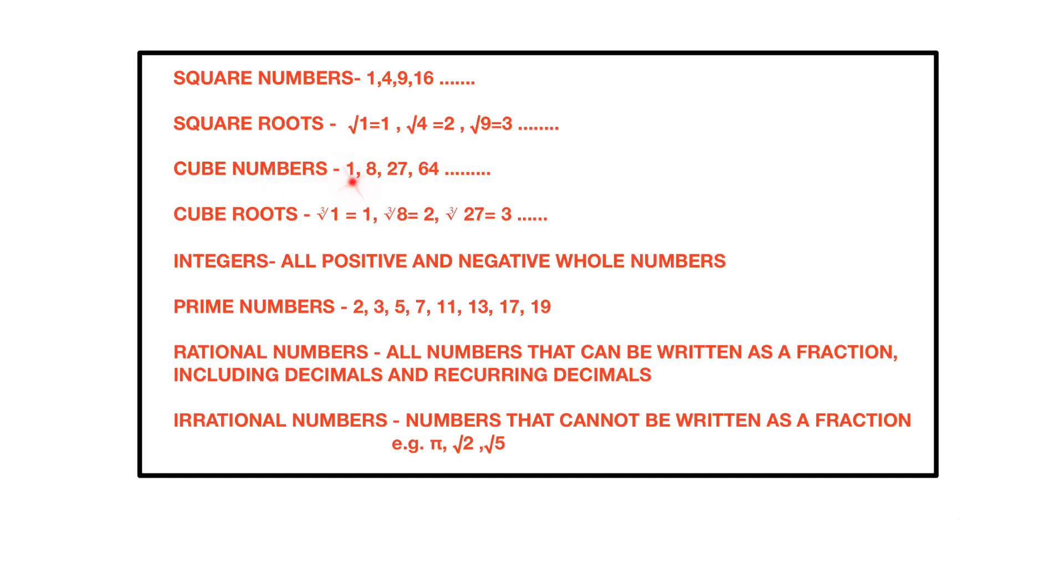Cube numbers are when numbers are multiplied by itself 3 times. So 1 times 1 times 1 is 1, 2 times 2 times 2 is 8, 3 times 3 times 3 is 27. Cube root of 1 is 1, cube root of 8 is 2, cube root of 27 is 3.